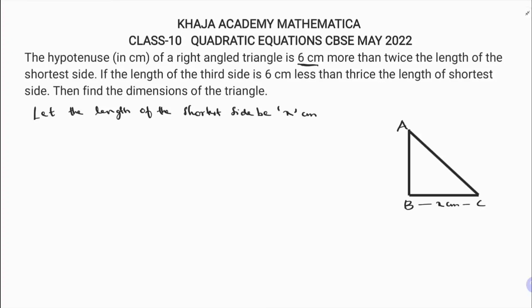The hypotenuse of the right angle triangle is 6 centimeters more than twice the length of the shortest side, so the hypotenuse AC equals 2x plus 6. The length of the third side AB is 6 centimeters less than thrice the shortest side, so AB equals 3x minus 6.